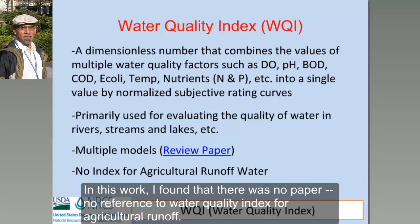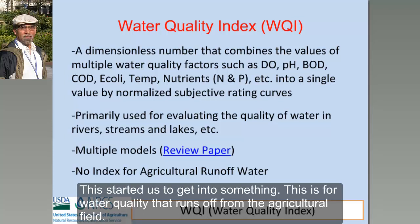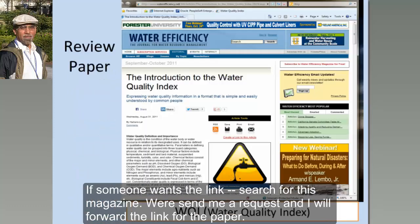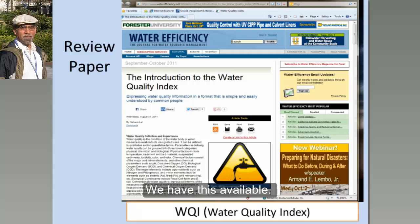In this review work, what I found was that there was no paper, no reference to a Water Quality Index for agriculture runoff. And that's what excited us — to develop something for the water quality that runs off from agricultural fields. This review paper is available in Water Efficiency Magazine; you can search for it or send me a request and I'll forward you the link.